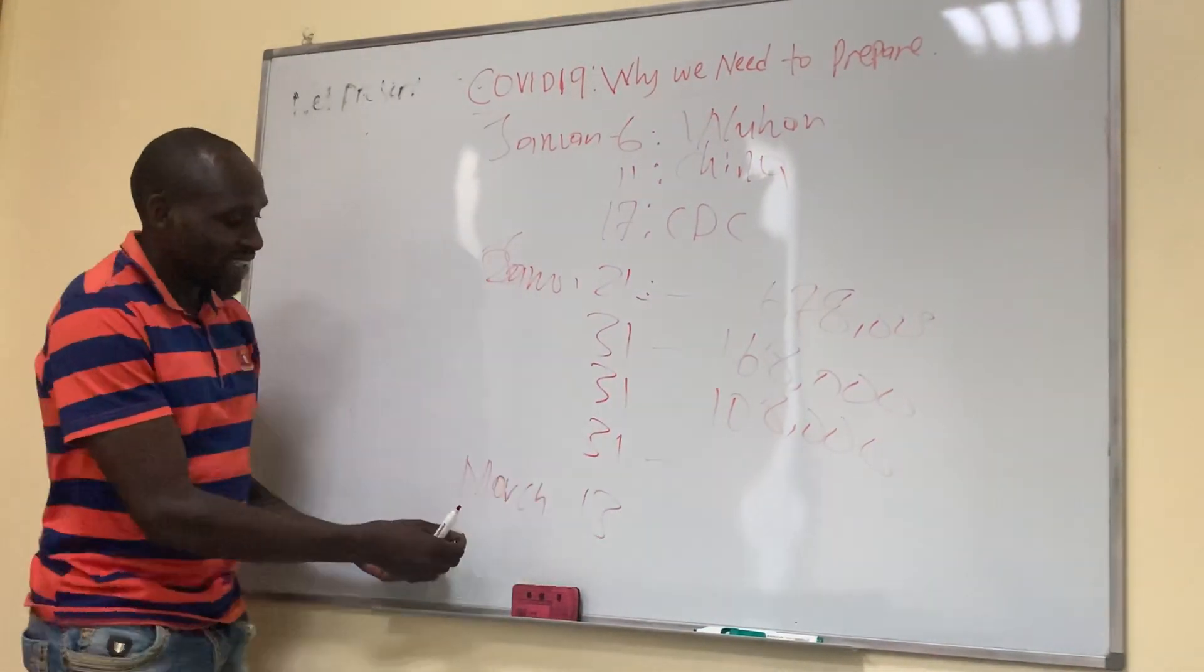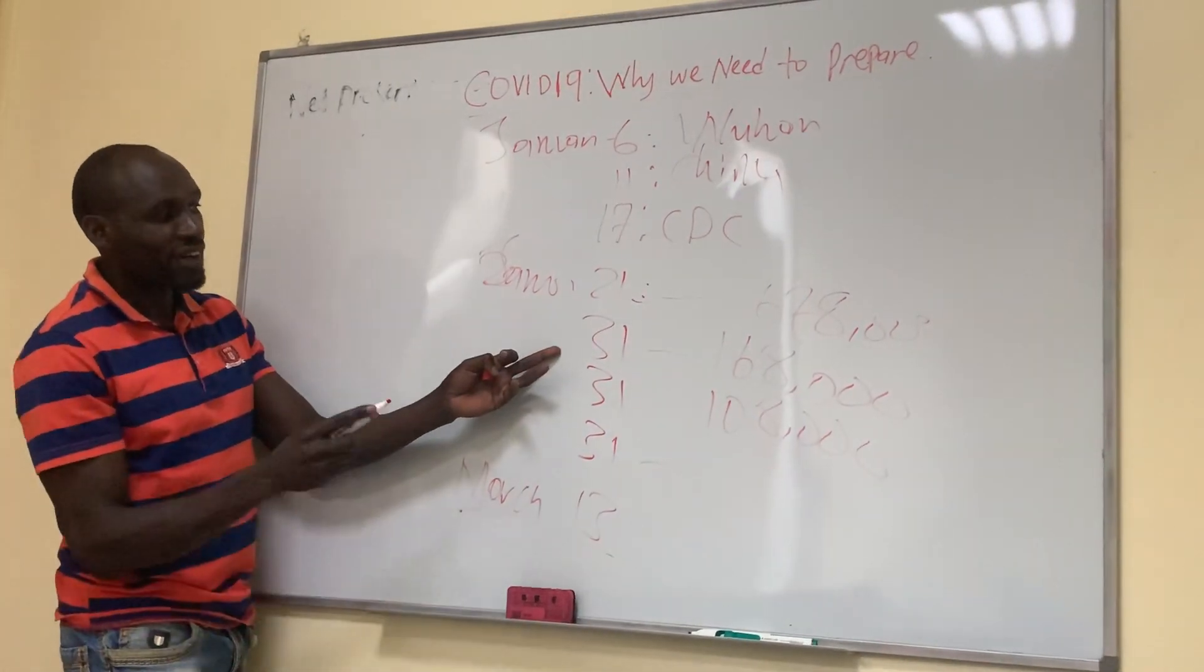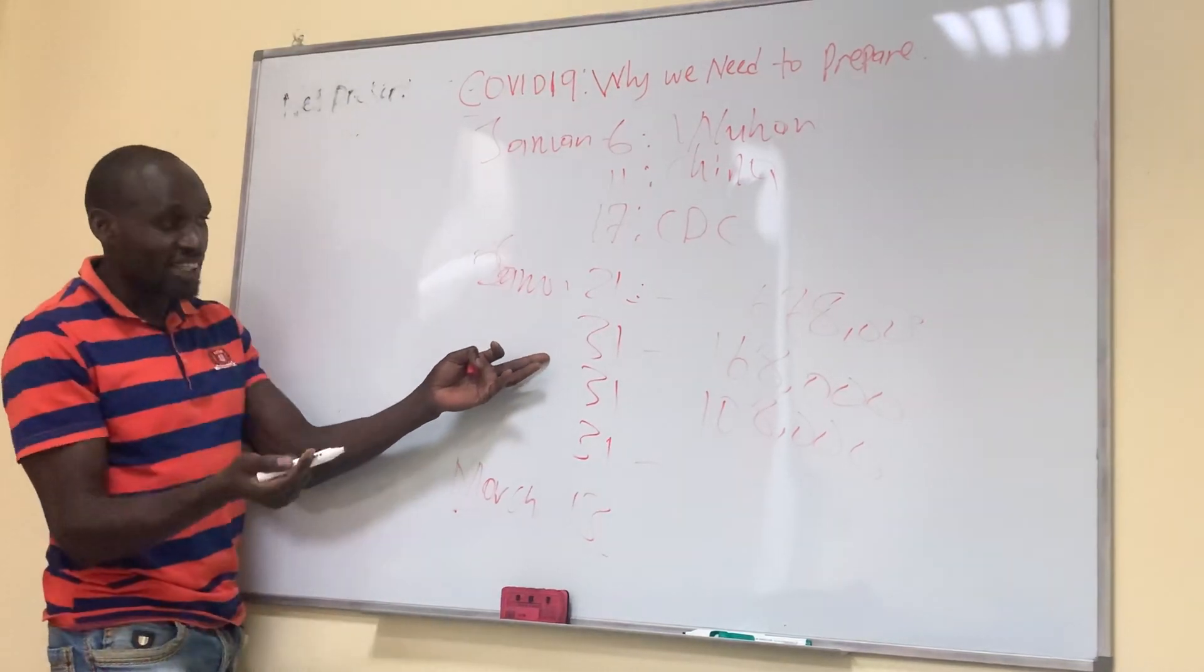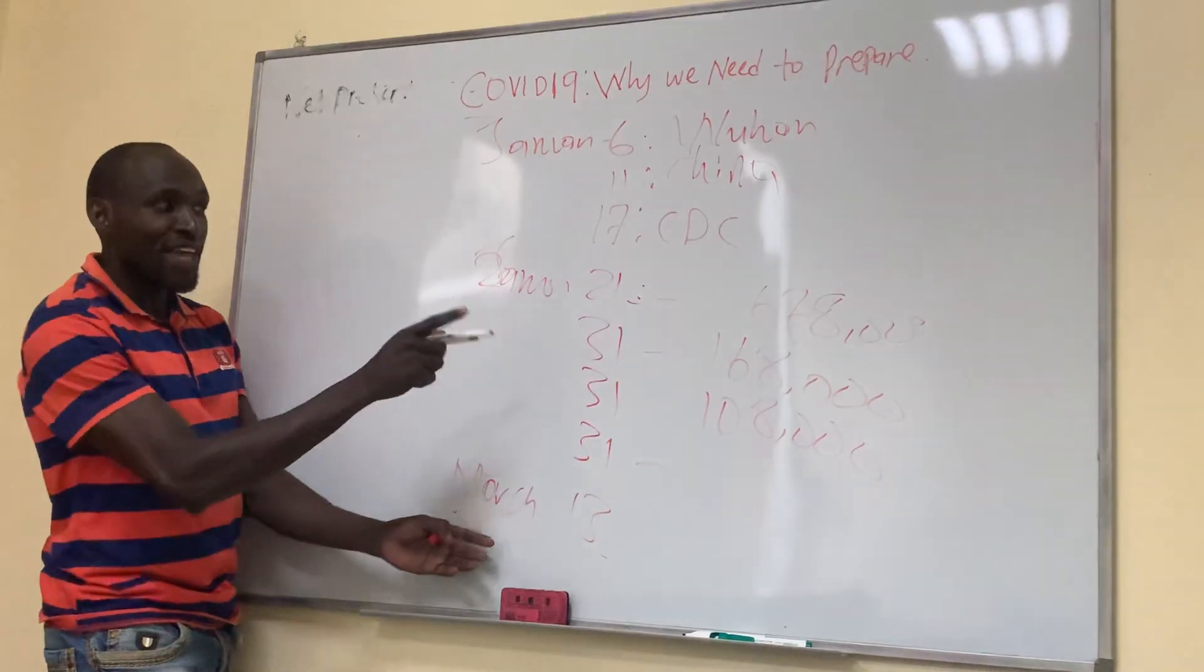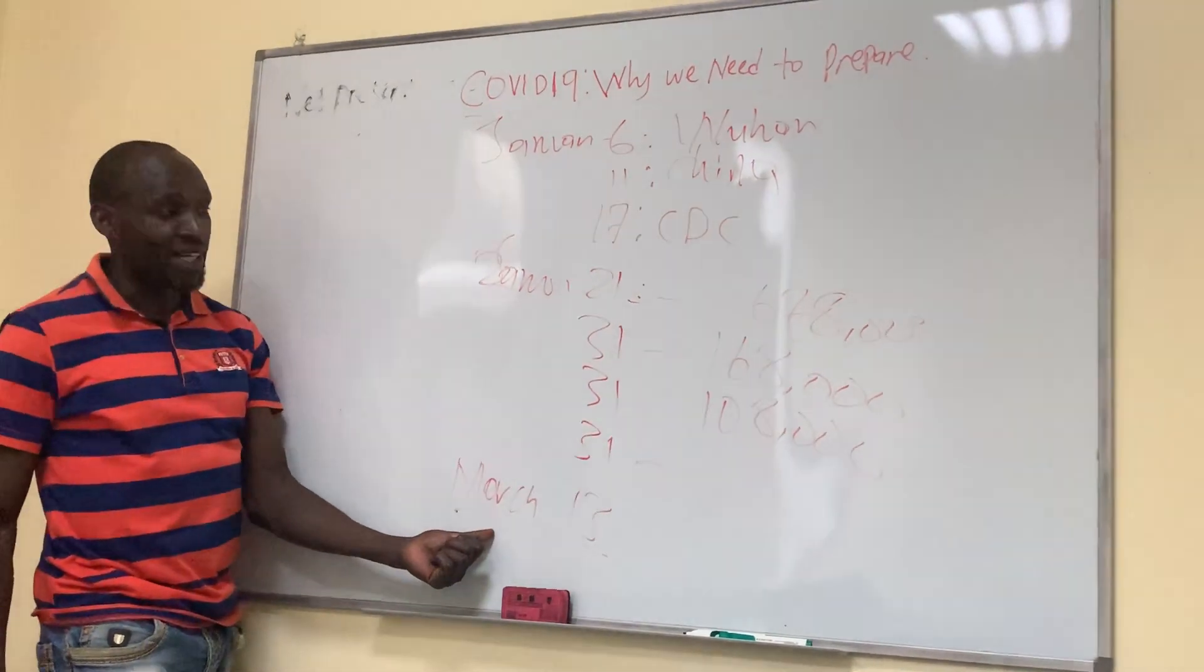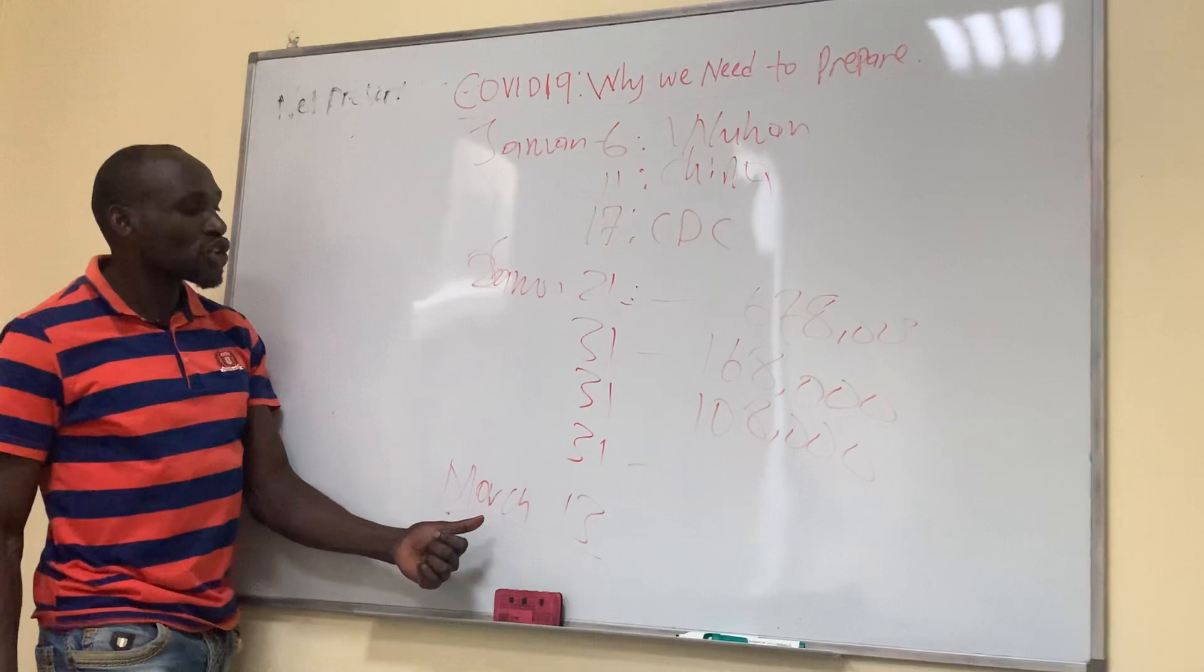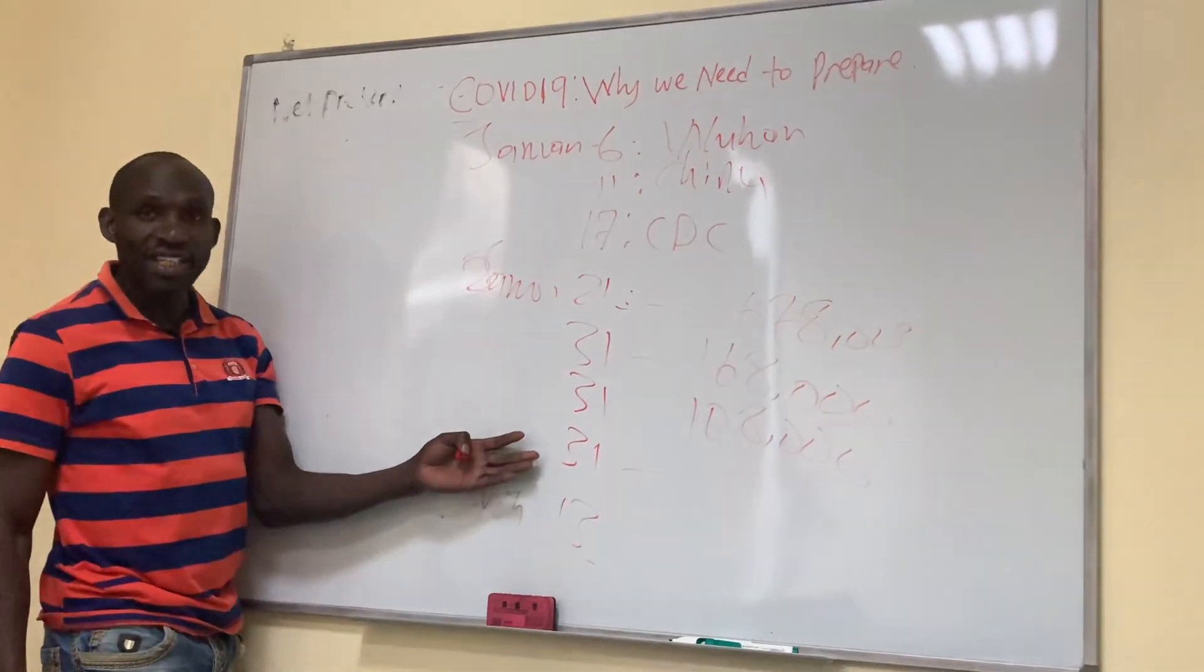So what I'm trying to say is that if on 31st of January there was the first case in Italy, UK, Spain, and now they are doing those hundreds of thousands, yet in Kenya we had the first case in March, which means that we are like two months behind these countries in terms of COVID-19 cases.